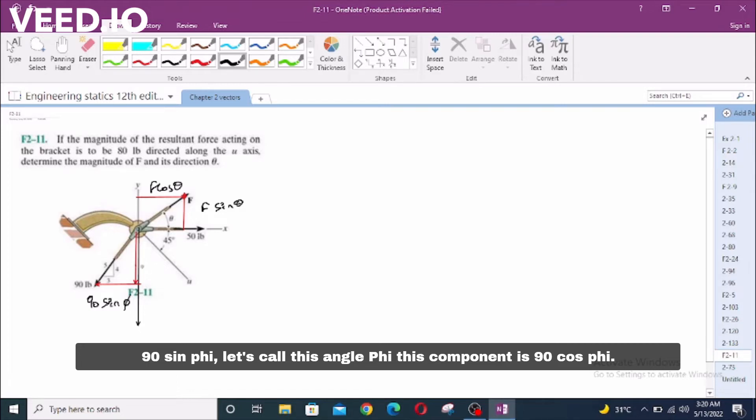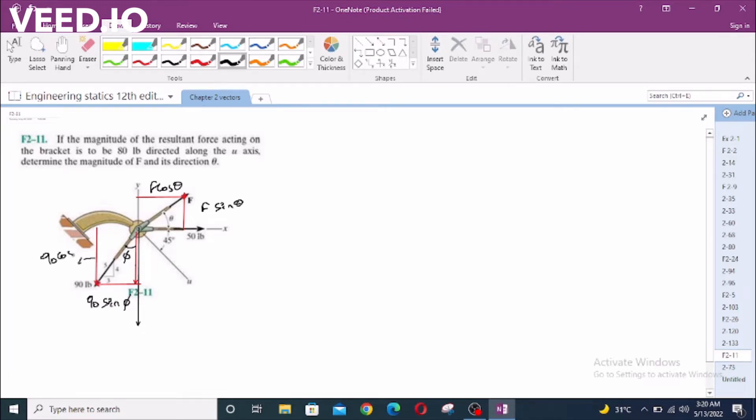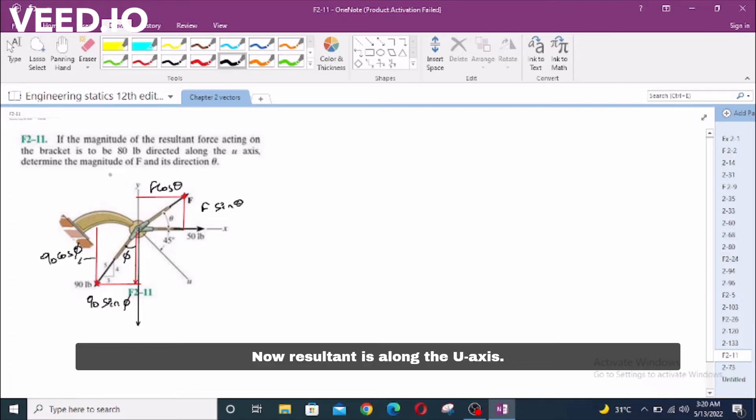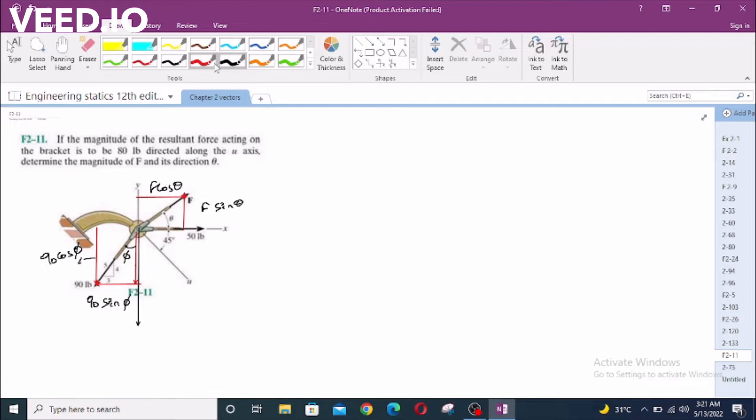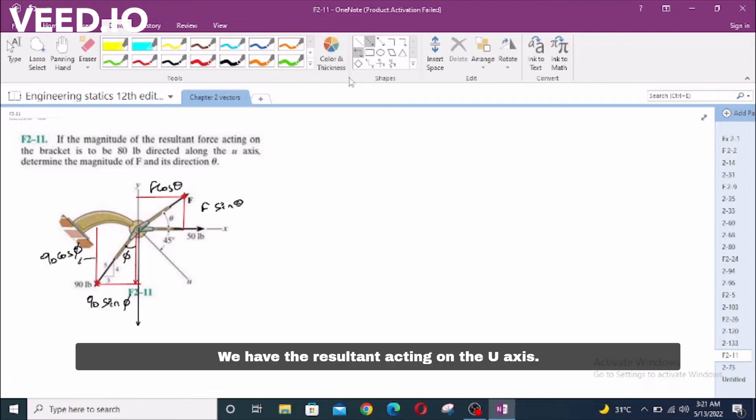Let's call this angle phi. 90 cos phi. This component is 90 cos phi. Now the resultant is along the U-axis. We have the resultant acting on the U-axis.